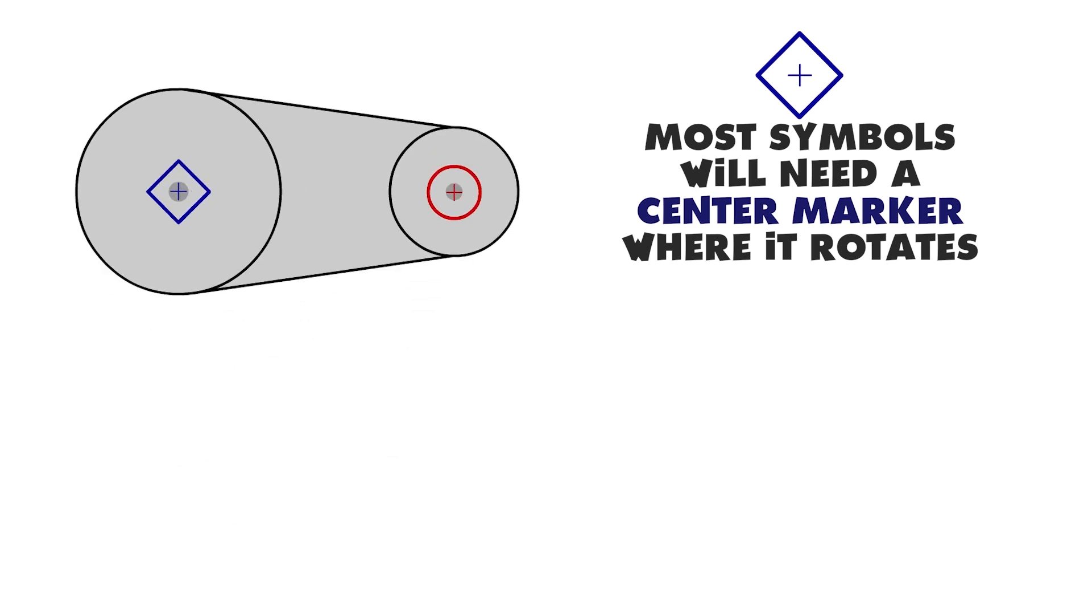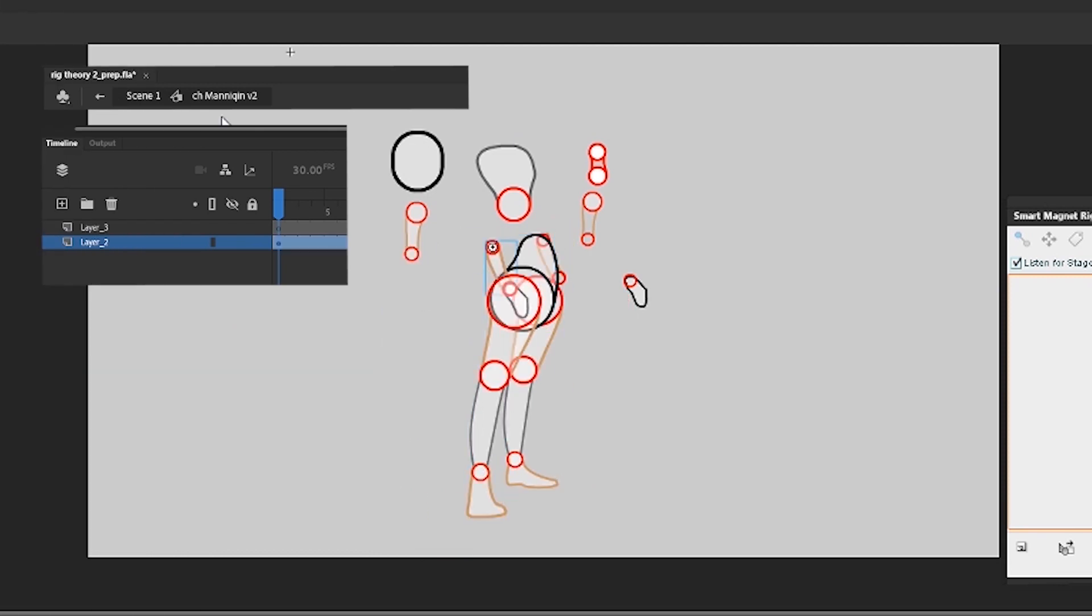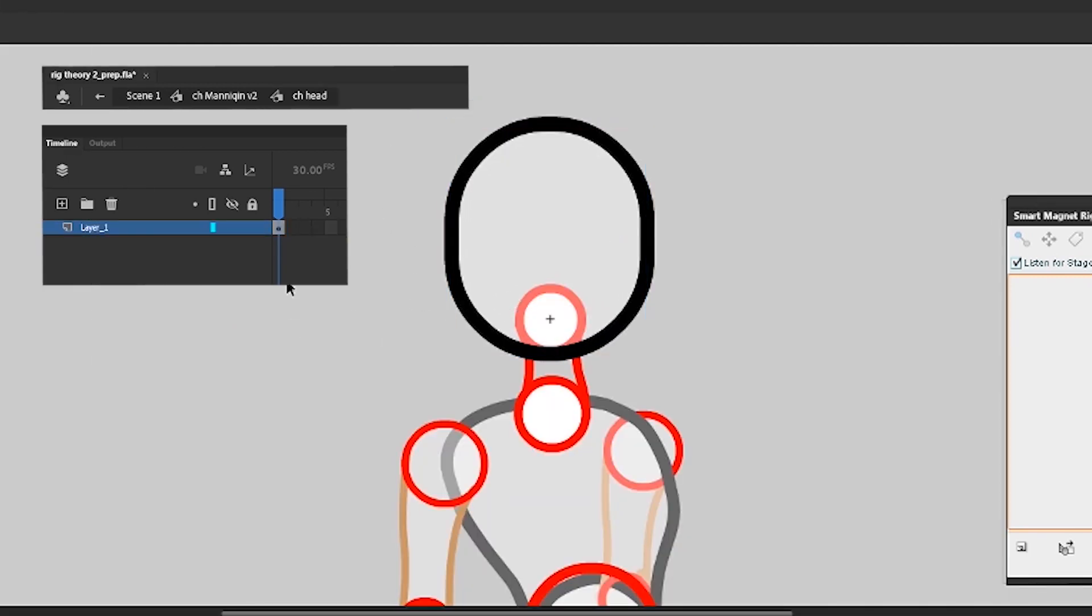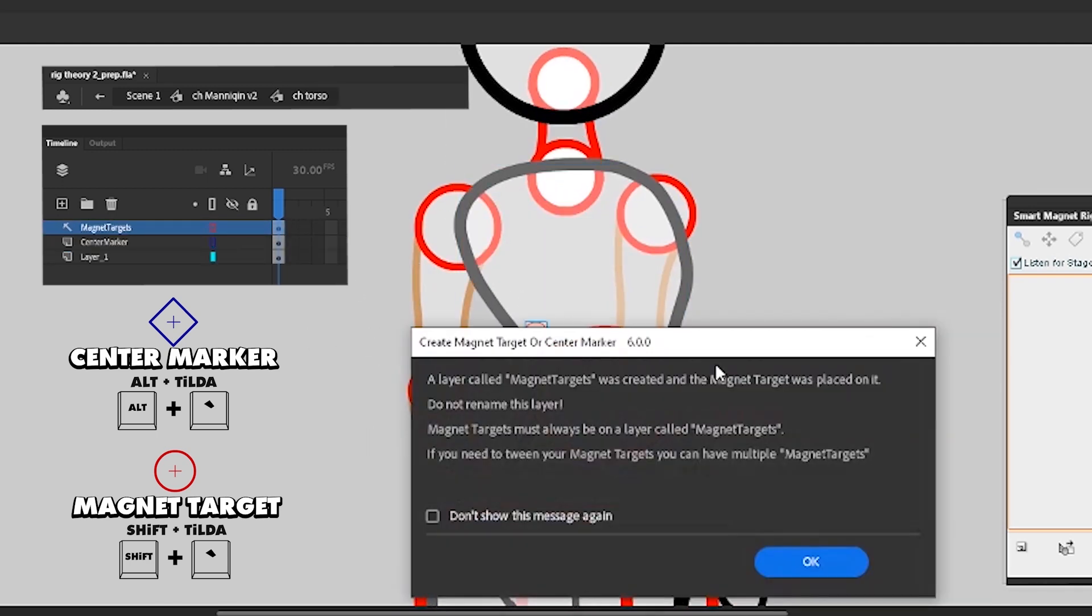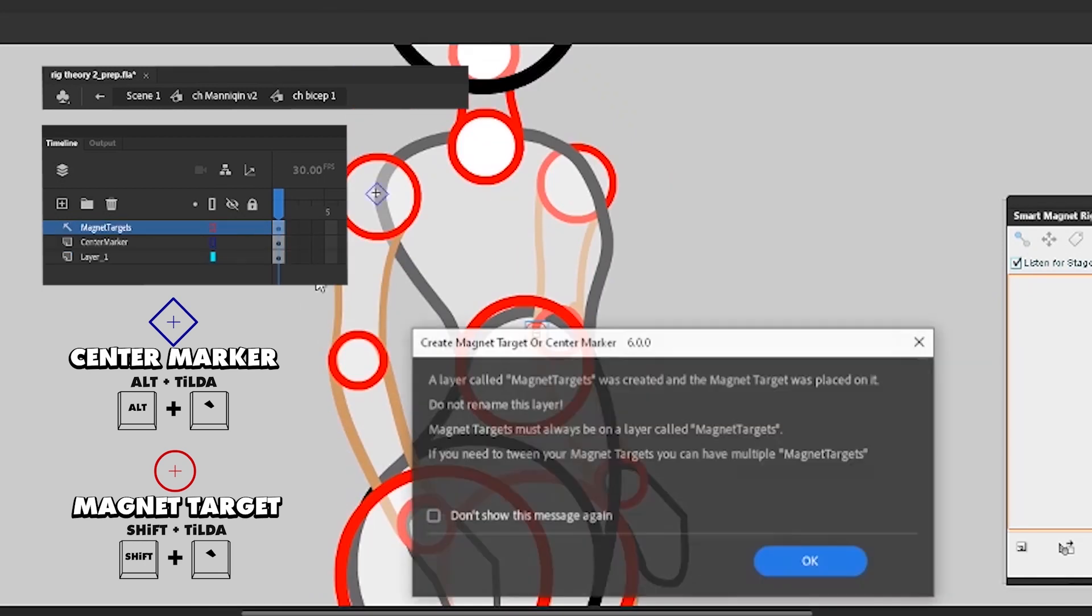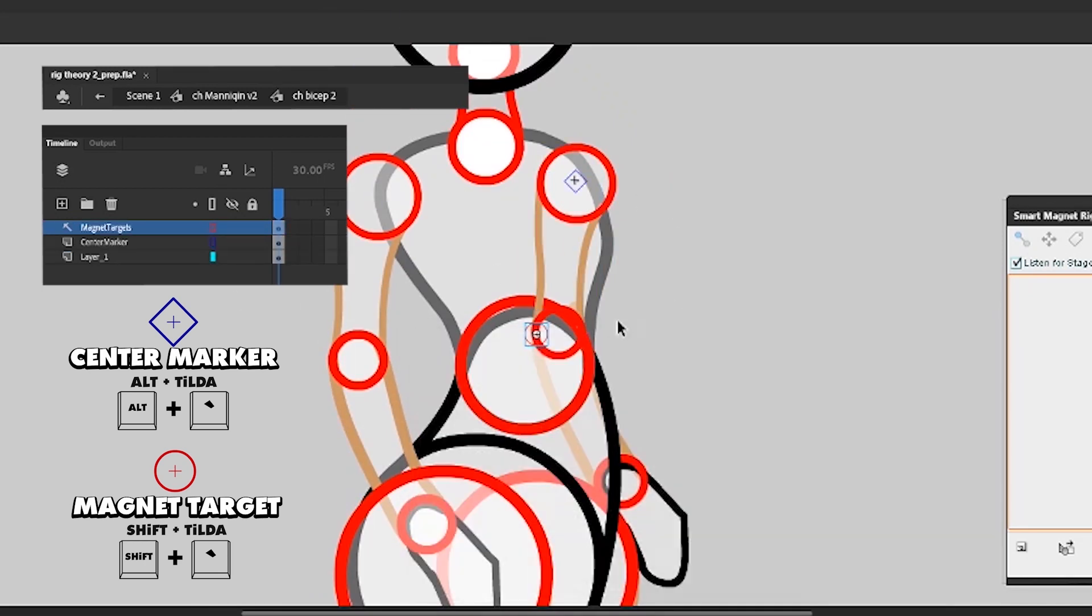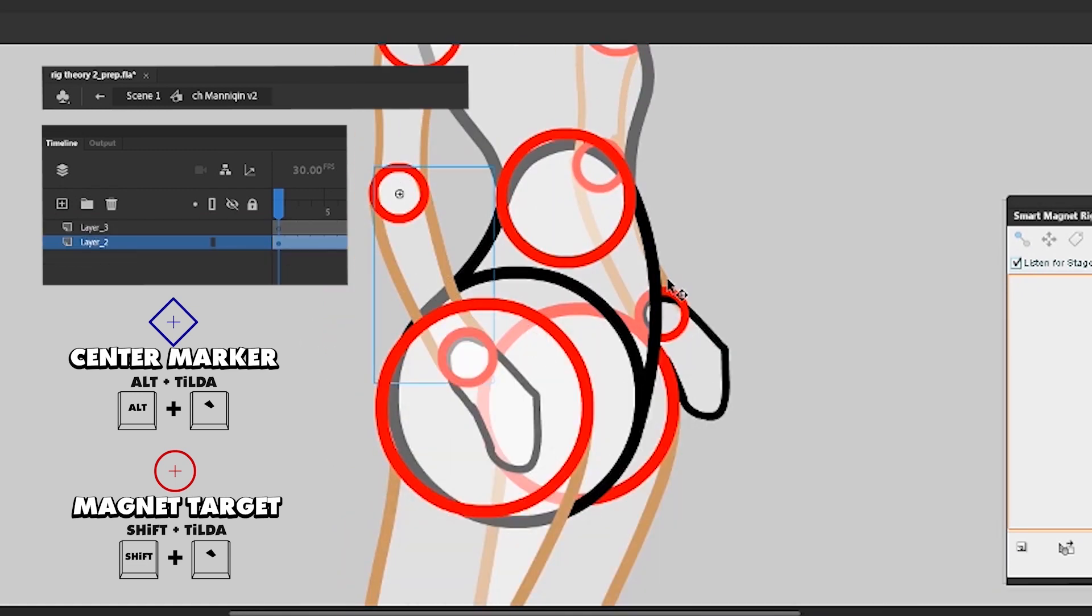This is another step that's pretty repetitive, so I'm going to speed it up on the video, but you'll notice that in each of the symbols I'm accessing them and setting up markers in the timeline. The center marker and the magnet targets are going to be created for you automatically when you press Shift+Tilde and alternately Alt+Tilde.